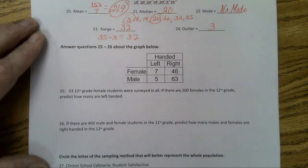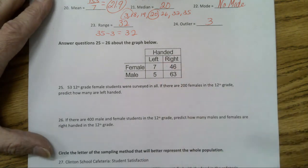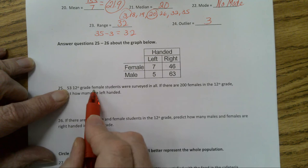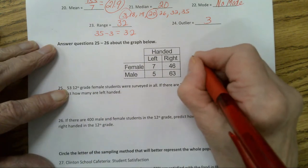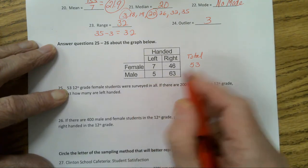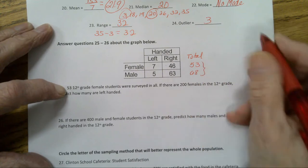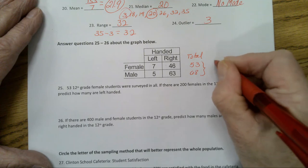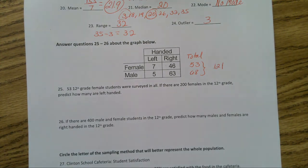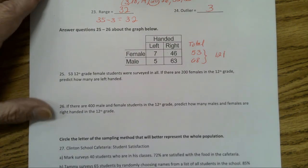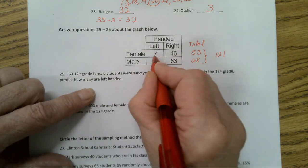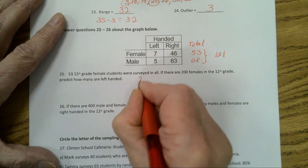Okay, let's look at number 25 and 26. Here we are looking at left and right handed people. We have males and females. The first question deals with females. It says 53 12th grade female students were surveyed. So if I have the total, the total number of females will be 53, the total number of males will be 68. And then if we wanted the total number of total students, we would add those two together and 121 total students in that survey.